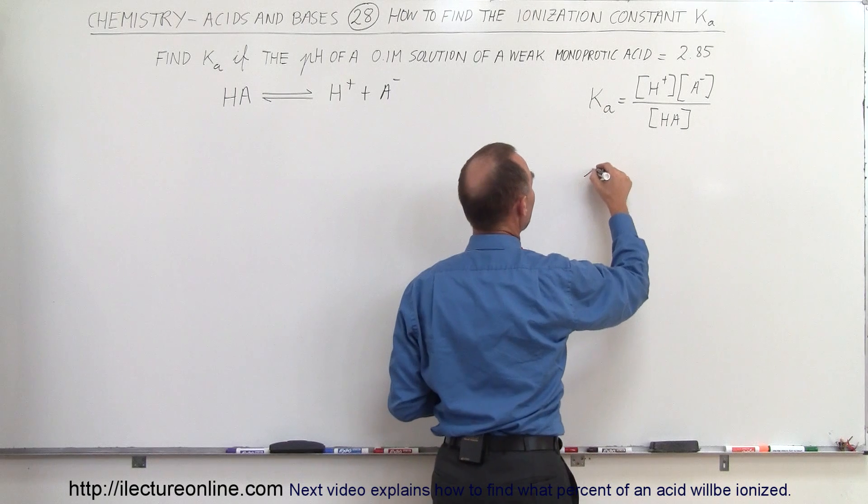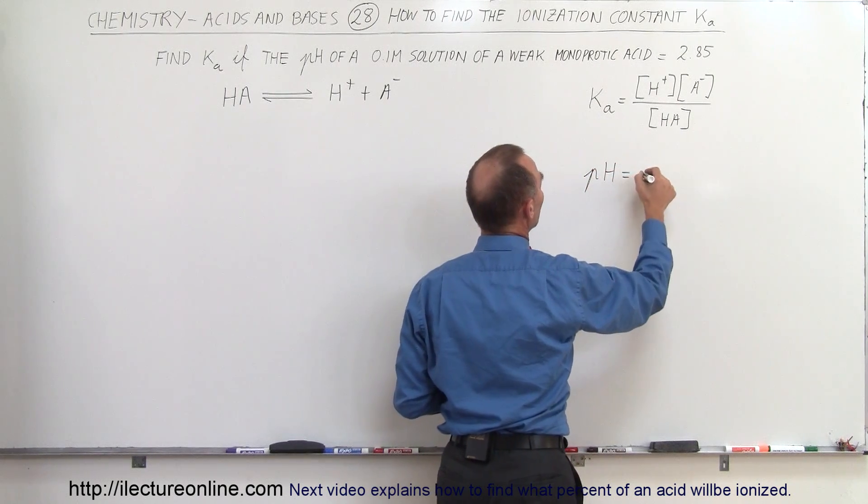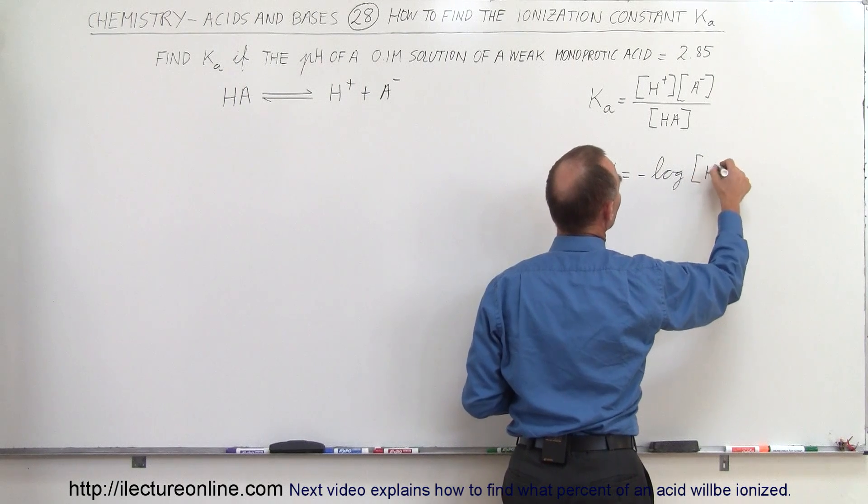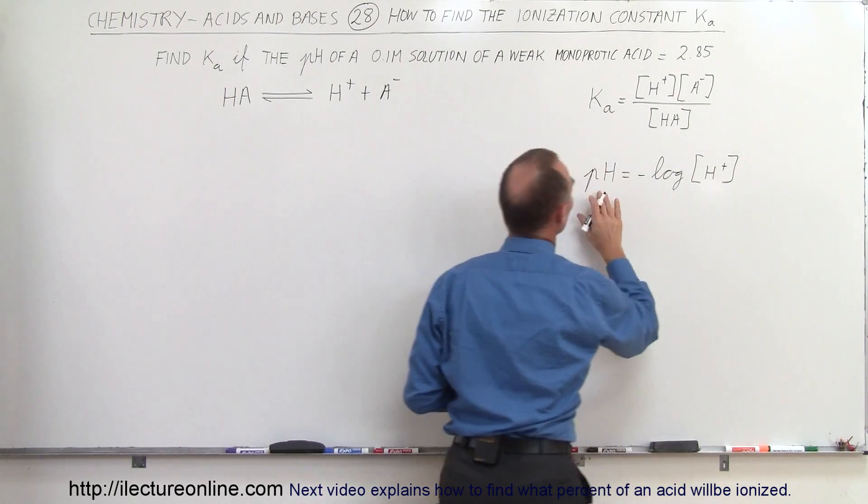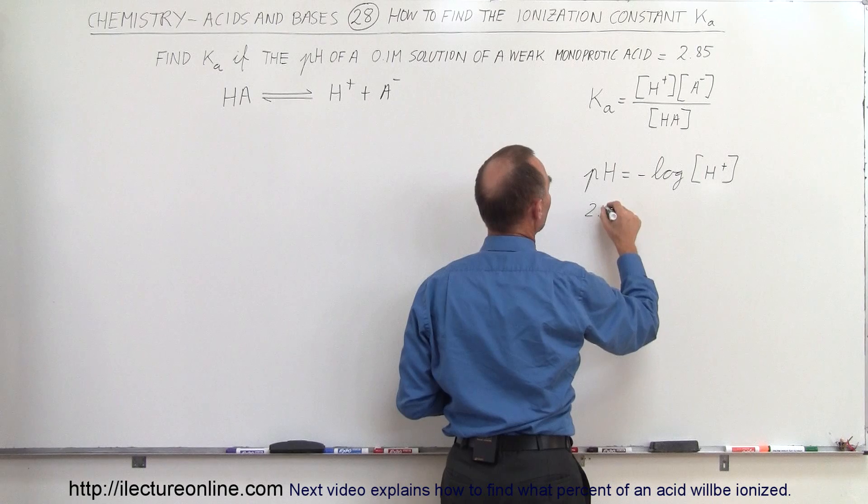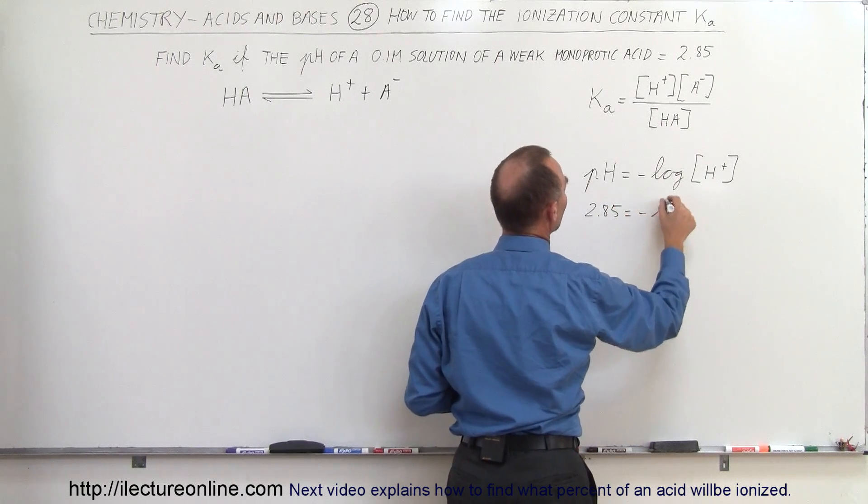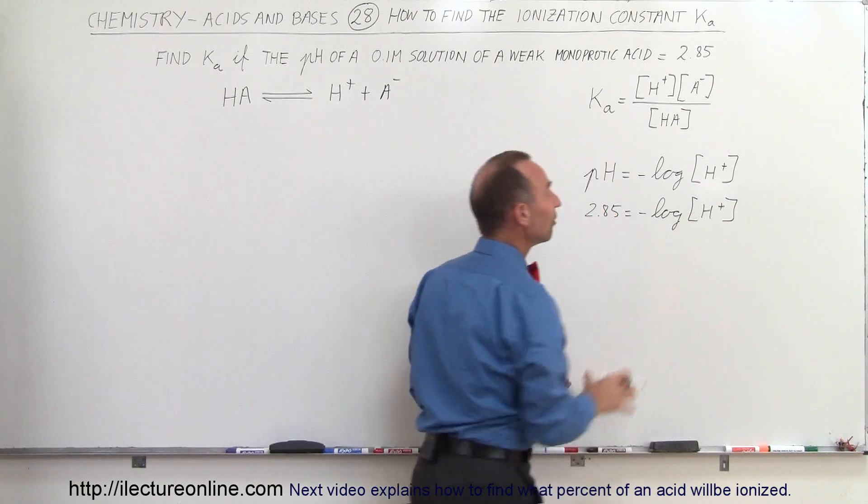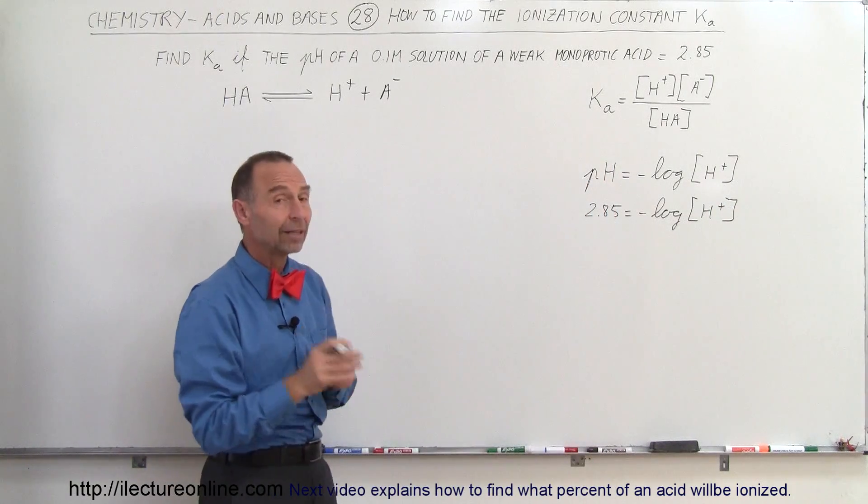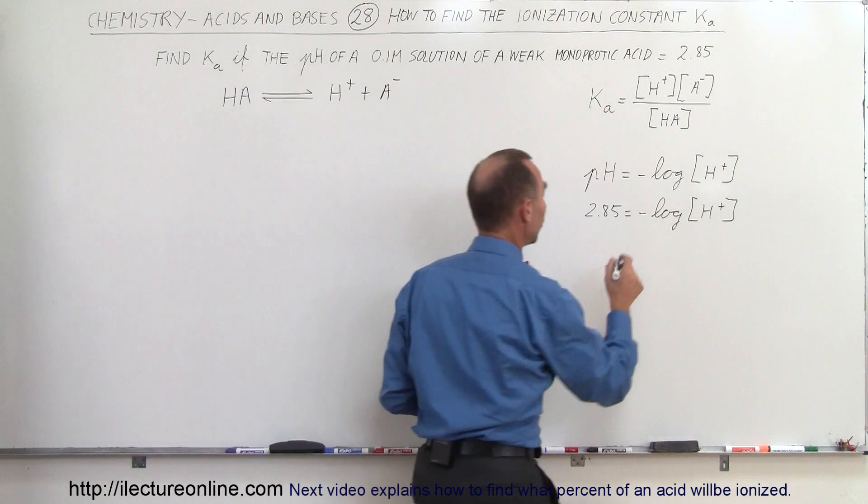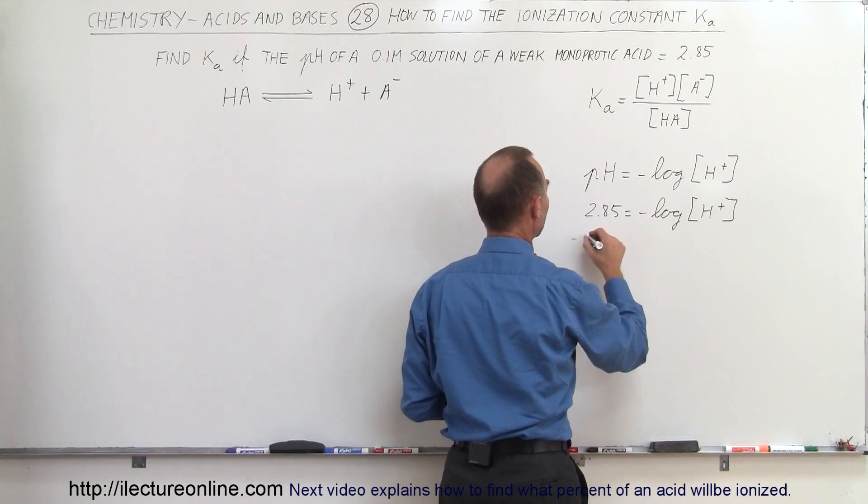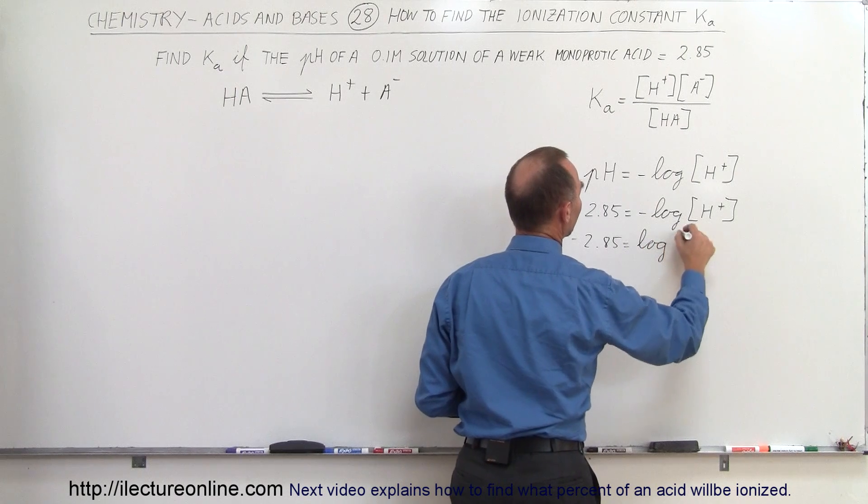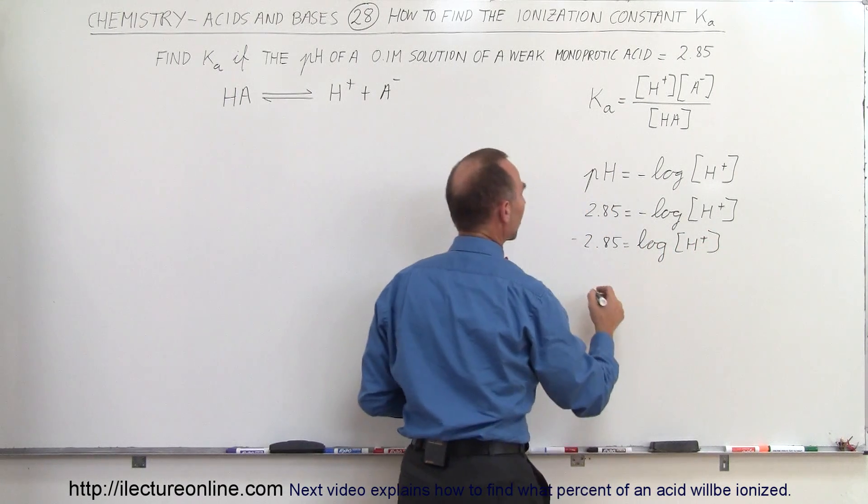We can do that by knowing that the pH is equal to minus the log of the concentration of the hydrogen ion. And so since we know what the pH is, we say that 2.85 is equal to minus the log of the hydrogen ion. And so from this, by taking the anti-log, we should be able to find the concentration of the hydrogen ion. So taking the negative sign, put it over here, minus 2.85 is equal to the log of the hydrogen ion.